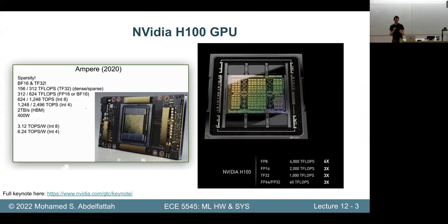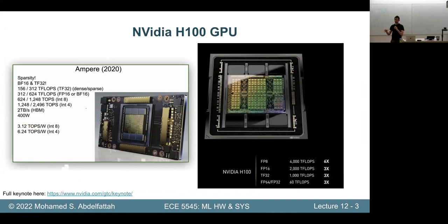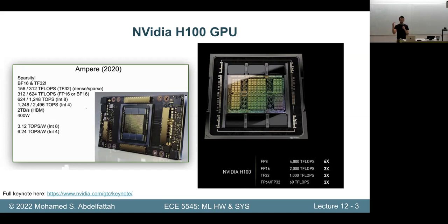Ampere was 7 nanometer technology — the transistor size is 7 nanometers — whereas this one is 4 nanometers. We halved the size of each transistor, but because of Dennard scaling, which you've learned about, we're not halving the power density. They appear to be maxing out the power envelope of a board that can fit in a data center with proper cooling — this can be both water-cooled and air-cooled.